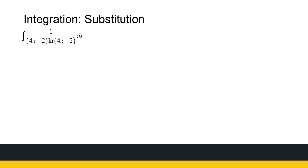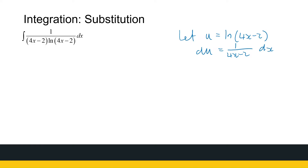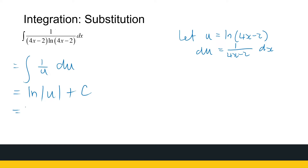Next one — ln is here again. It's 1 over (4x minus 2) times ln(4x minus 2). I already know that the derivative of ln of a function is 1 over that function. So I say let u be equal to ln of 4x minus 2. du is then 1 over (4x minus 2) dx, and that is what I have present. So when I substitute, the whole part 1 over (4x minus 2) dx becomes du, and I'm left with 1 over ln(4x minus 2), which is 1 over u du. The antiderivative of 1 over u is ln of the absolute value of u plus c. So this is ln of the absolute value of ln(4x minus 2) plus c. And again, you can differentiate to test your answer.